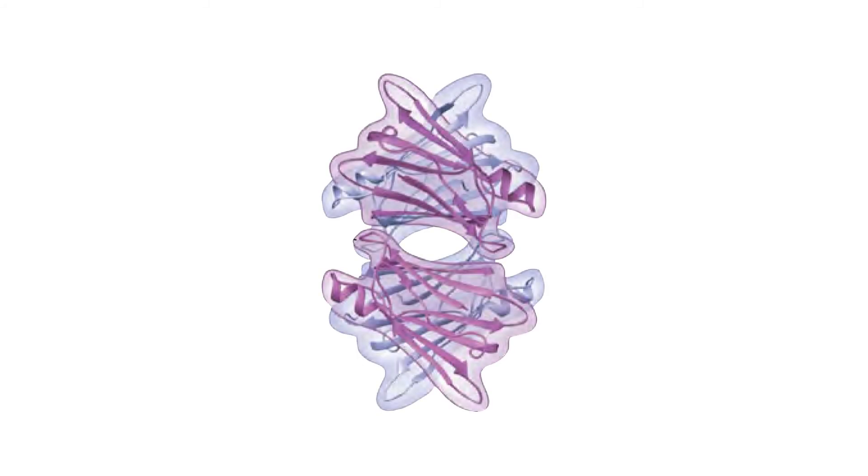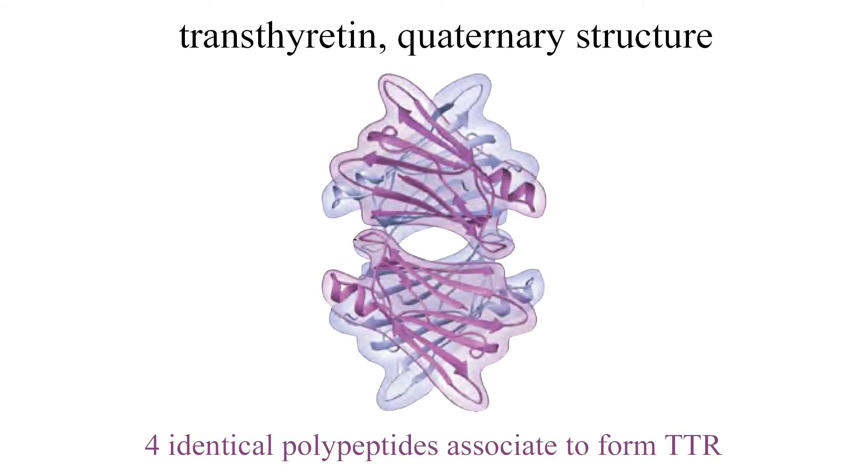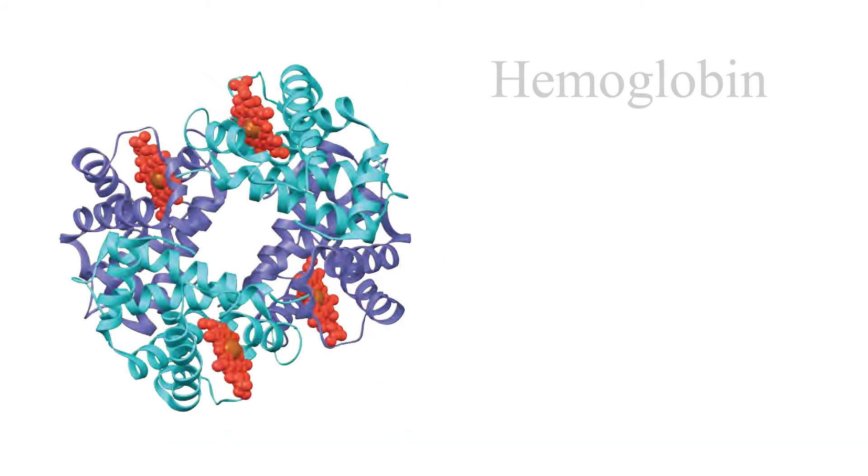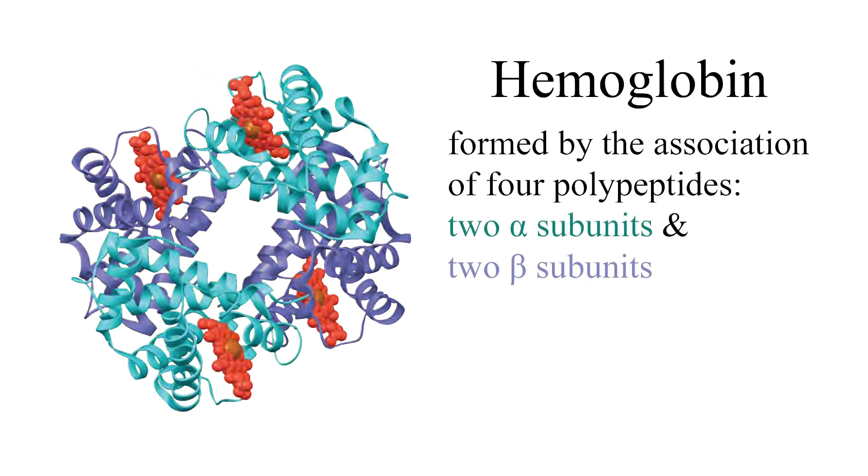Quaternary structure describes overall protein structure that results from the aggregation of multiple polypeptides. Hemoglobin is a protein that exemplifies quaternary structure. It's made up of four polypeptides that associate with each other in order to form the characteristic shape of a red blood cell.